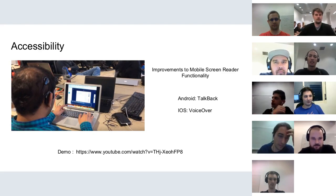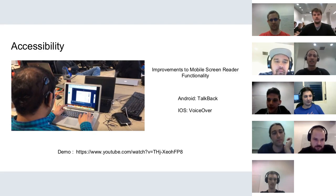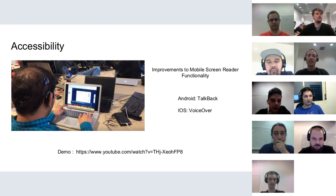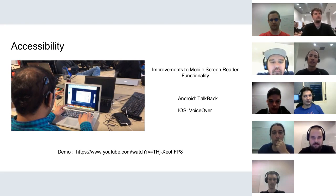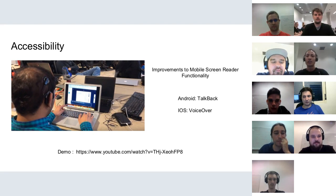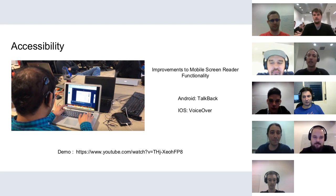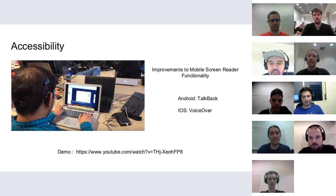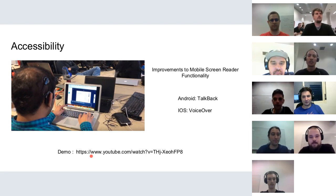We've been working a lot with accessibility recently. Previously, the HTML5 client was accessible to desktop screen readers such as NVDA or JAWS, but we wanted to take it a step further and make sure that mobile screen readers also had the same experience. We've made sure that the client now functions the same using Android's TalkBack or VoiceOver from the iOS platform. There is a link in the slide to a demo of our QA person, who has a visual disability, using the screen reader to interact with the recent changes.